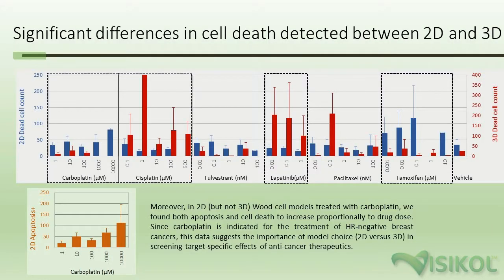This slide reiterates the results from the previous slide, but is looking at dead cell count for 2D versus 3D. Again, what we see is that when grown in 2D versus 3D, the results are quite different. For carboplatin, cisplatin, and tamoxifen, we see greatly different results between 2D and 3D, because our 2D model is not recapitulating the features of our in vivo model, leading to differential response between the more indicative 3D model and the traditional 2D cell culture model.